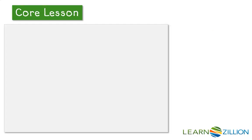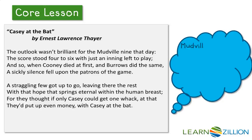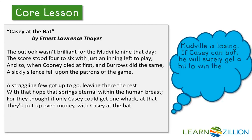Now, in our poem, we know that Casey had to face a challenge. But what was his challenge? A challenge is a problem, so Casey must have faced some kind of problem. I remember that at the beginning of the story, Mudville is losing. Casey has the challenge of being the last one to bat for his team. It was up to him to win the game. That's a pretty big problem.